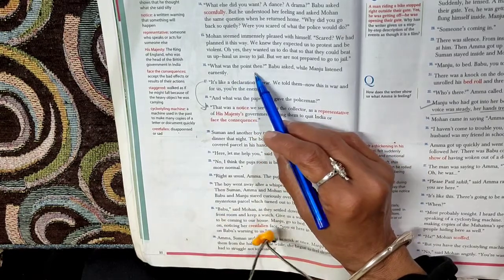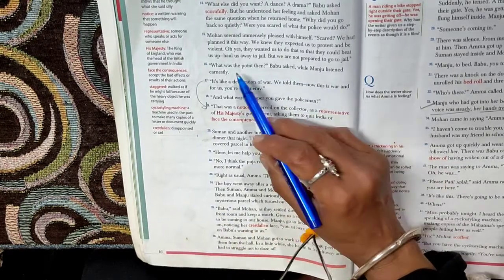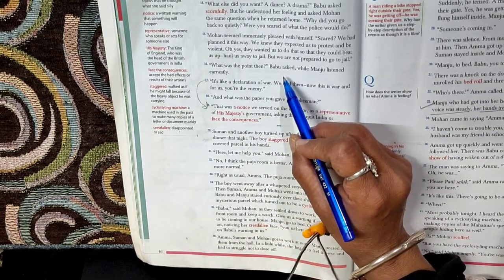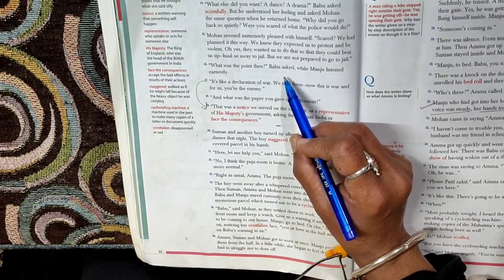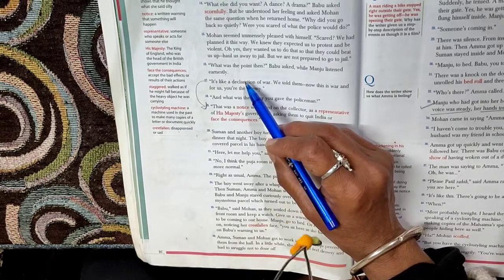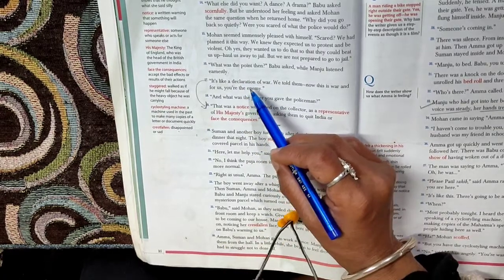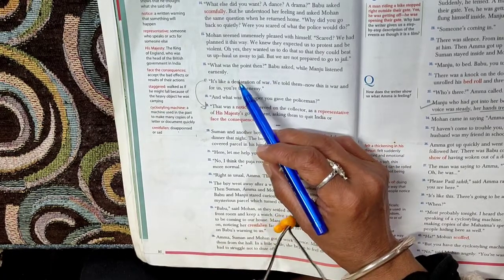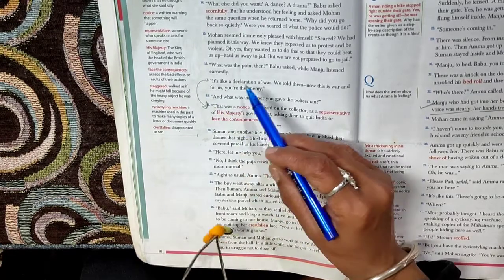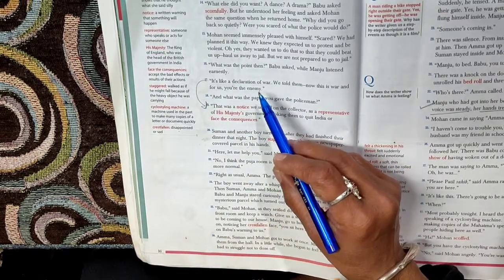What was the point then? Babu asked, while Manju listened earnestly. Babu couldn't understand the explanation given by Mohan. So he says, what was the point then of taking out a procession, going to the collector's office and moving back peacefully? What was the point of all this?